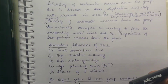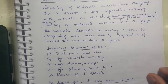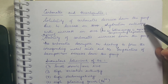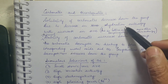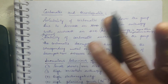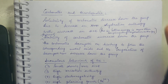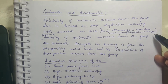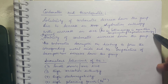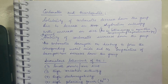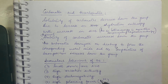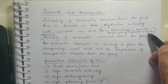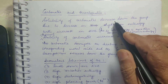For carbonates and bicarbonates, the solubility of carbonates decreases down the group. Again this is due to decrease in hydration enthalpy with increase in size — hydration enthalpy always decreases with increase in ionic size. The increase in lattice energy more than compensates the decrease in hydration enthalpy, so the hydration enthalpy is not sufficient to break the lattice, and therefore solubility decreases down the group.